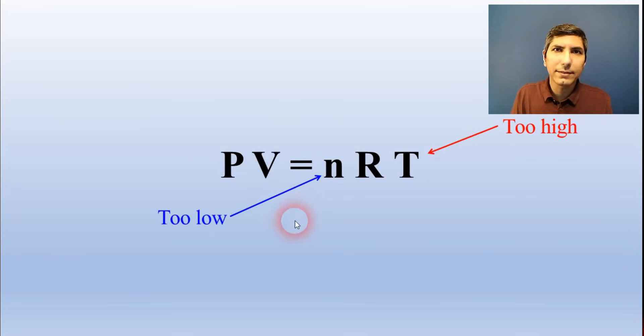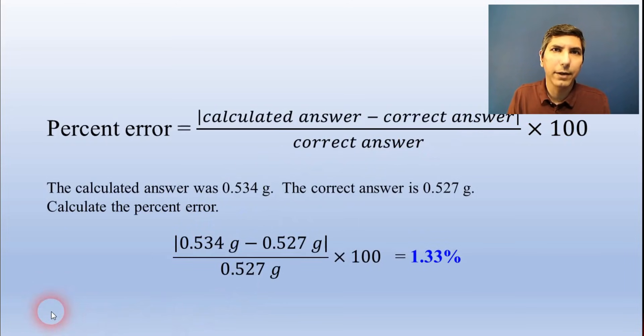You're sometimes asked to calculate percent error. The percent error of a result is equal to the absolute value of the difference between the calculated answer and the correct answer all divided by the correct answer multiplied by 100.